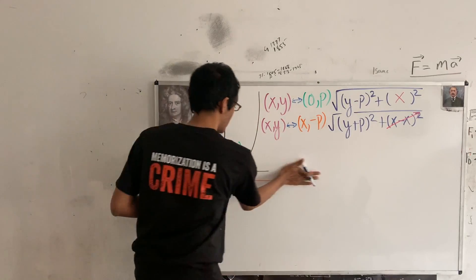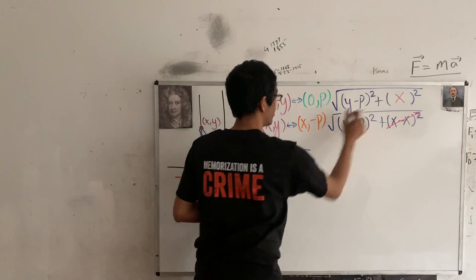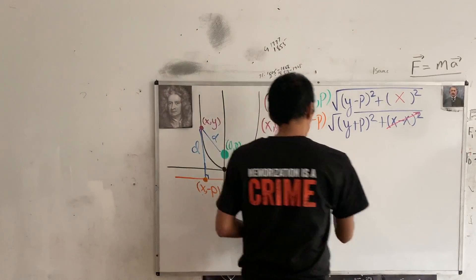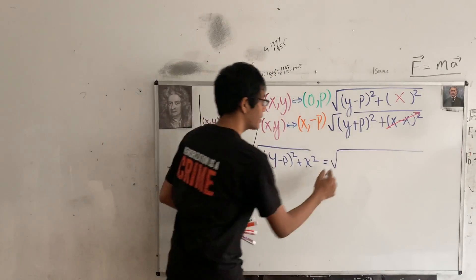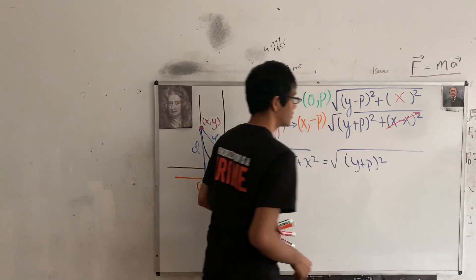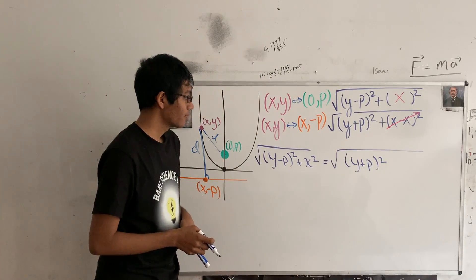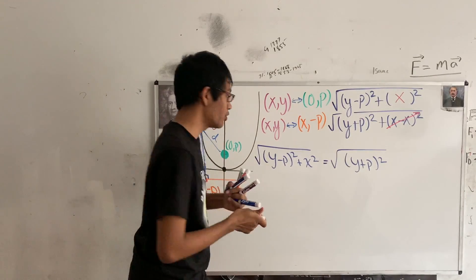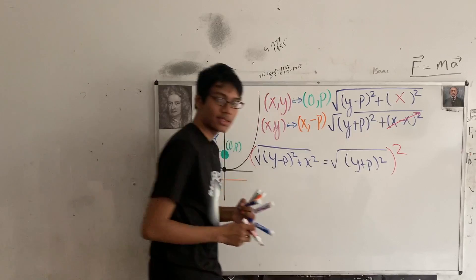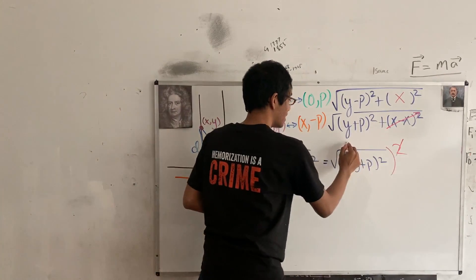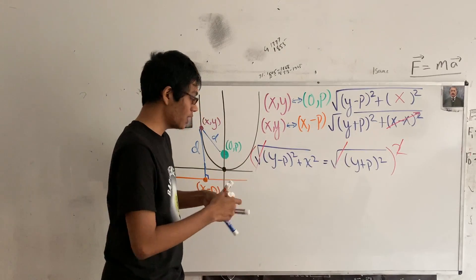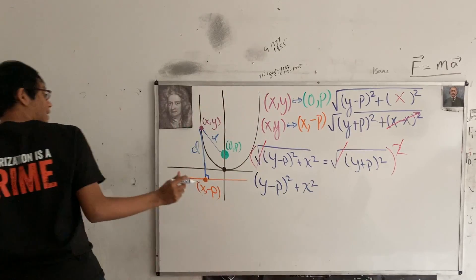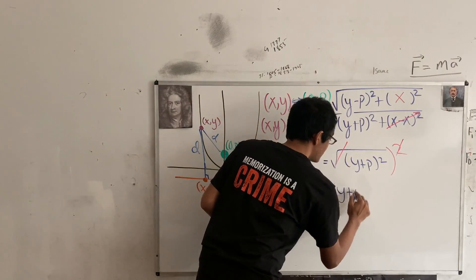We square both sides to eliminate the square roots. On the left-hand side we get y minus p whole squared plus x squared, and on the right-hand side we get y plus p whole squared. The square roots cancel, leaving us with a clean algebraic equation to expand.